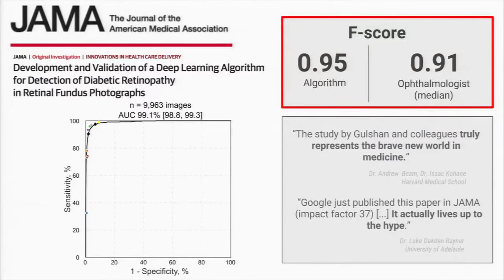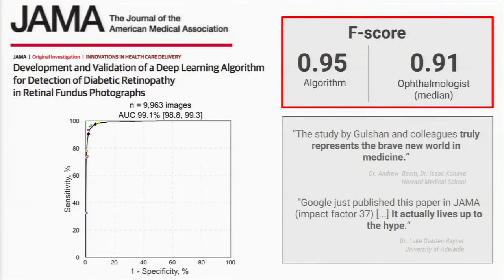Researchers have recently shown that you can train a machine learning model on these images to match the accuracy of your median ophthalmologist. This is really profound — it holds the potential at essentially zero marginal cost, other than the scanner, to deploy this all over the world. As long as people can have their eyes scanned, which will be far less expensive than seeing a professional ophthalmologist, we might be able to intervene earlier and save people from blindness.